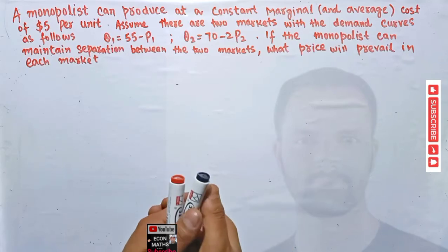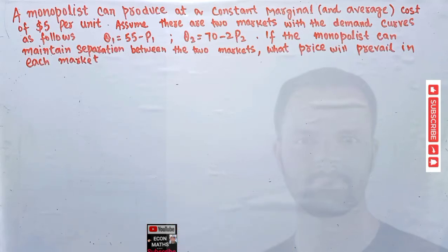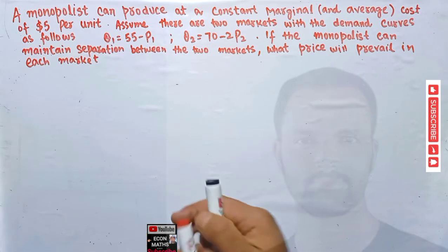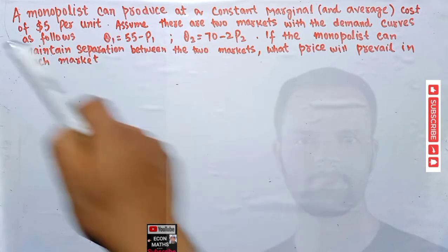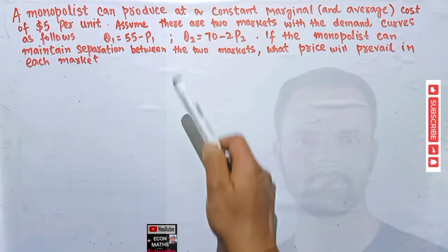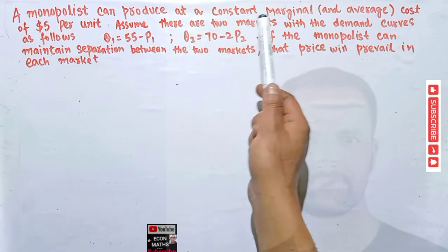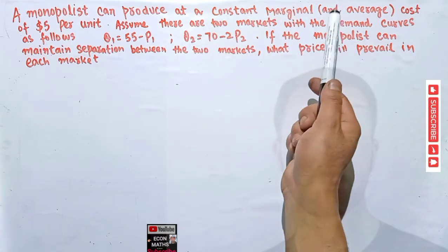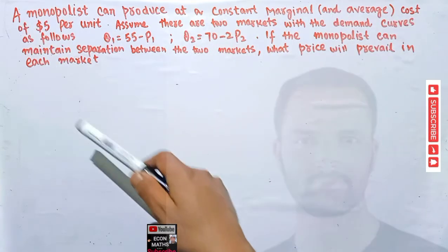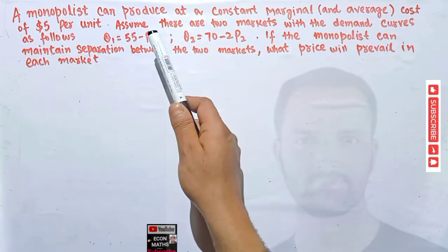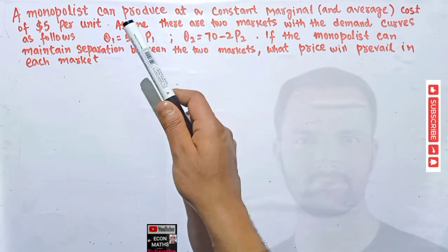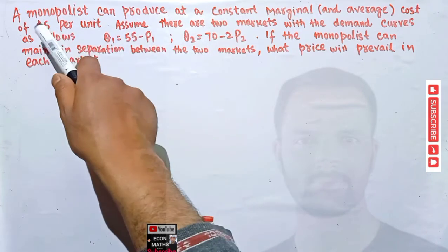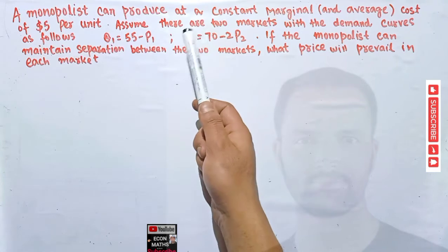Hi, this is Halal in the studio. In the mathematical economics series, we will solve another question asked by a friend on the Telegram channel. The question is: a monopolist can produce at a constant average cost of five dollars per unit. So for the monopolist, we have marginal cost equal to average cost, which is equal to five dollars per unit.